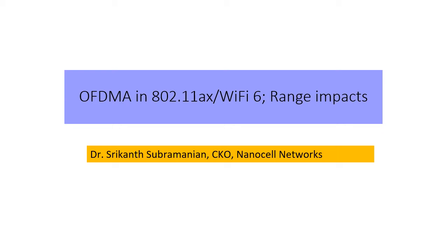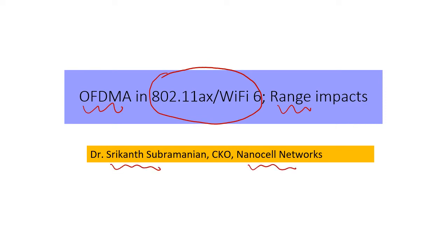Continuing our discussion on 11ax and Wi-Fi 6, I want to talk about a point which probably doesn't get emphasized that often: how much does OFDMA help with respect to range, and especially on the uplink. This is the topic I want to focus on for a short presentation. My name is Srikant and I am with Nanocell Networks.